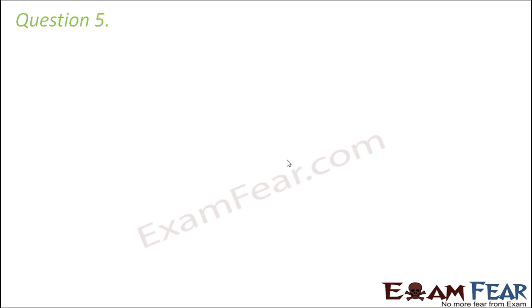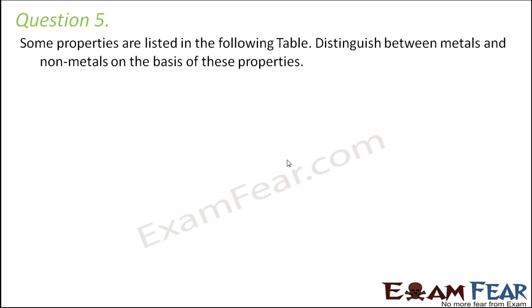Question number 5. Some properties are listed in the following table. Distinguish between metals and non-metals on the basis of these properties. So the first property is appearance. So let us say this side we will write metals and this side we will write non-metals. And we will say for each of these properties how do they differ. So appearance wise metals have lustre.